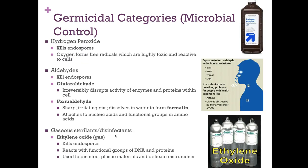Hydrogen peroxide also kills endospores. Oxygen forms free radicals — highly toxic and reactive compounds — that lead to various chemical reactions and cell death. When hydrogen peroxide is applied to living tissue, it bubbles because blood and living cells contain the enzyme catalase, which attacks hydrogen peroxide and converts it to water and oxygen. Hydrogen peroxide has been used as an antiseptic since the 1920s because it kills bacteria by destroying cell walls.